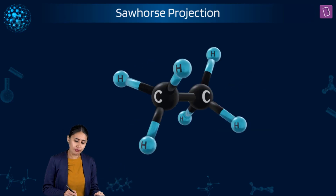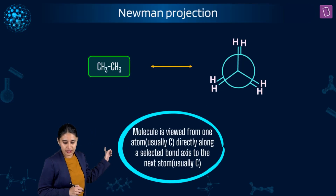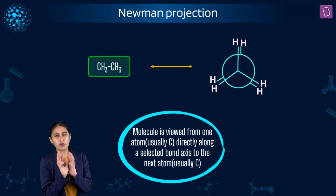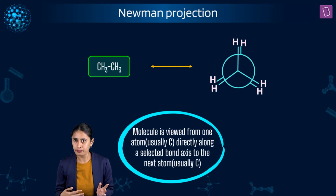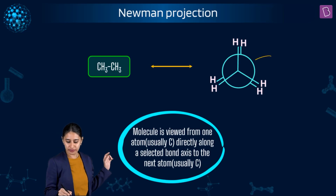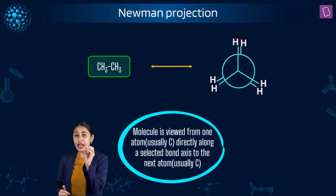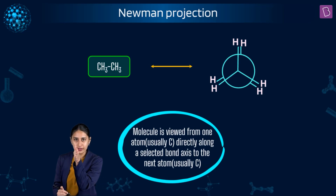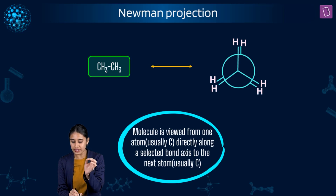Now let's look at the Newman projection. How can you remember which is sawhorse and which is Newman? In sawhorse, you can see these slant lines. In Newman, it's like a moon — a circular shape. In the Newman projection, we view the molecule head-on from one atom, usually carbon, directly along a selected bond axis to the next atom.